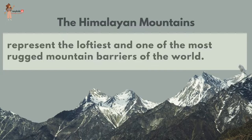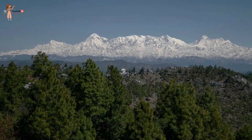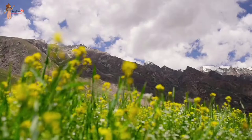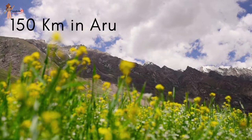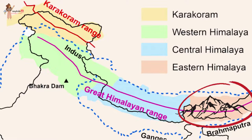The Himalayas represent the loftiest and one of the most rugged mountain barriers of the world. They form a boundary against all neighboring countries and cover an arc of about 2,400 kilometers. Their width varies from 400 kilometers in Kashmir to 150 kilometers in Arunachal Pradesh. The altitudinal variations are greater in the eastern half than in the western half.